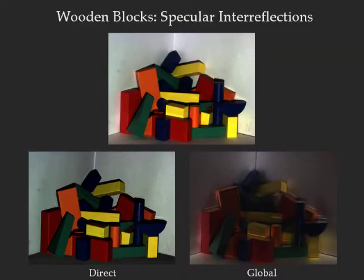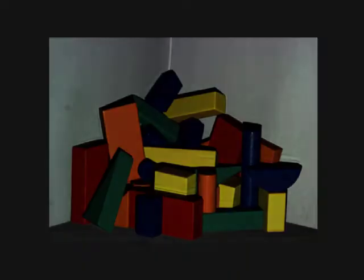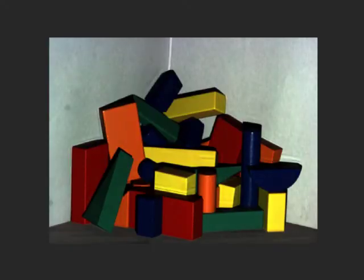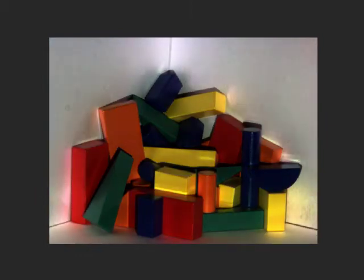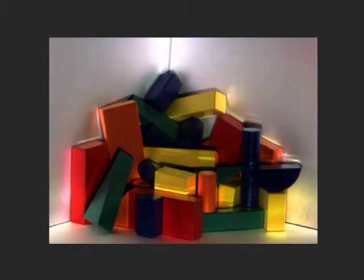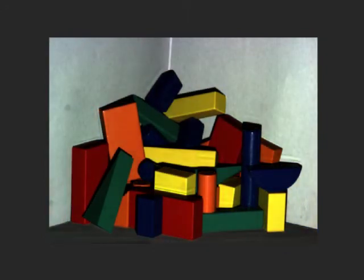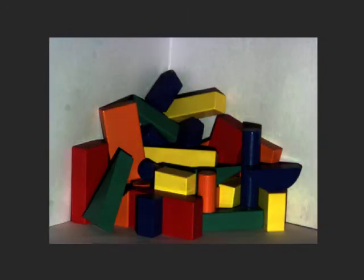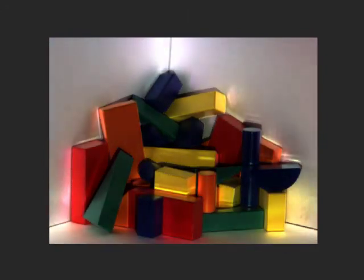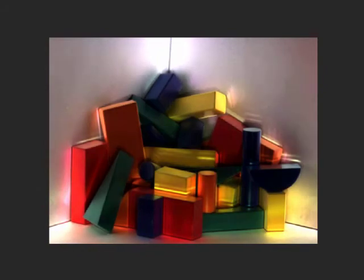In this scene with colored wooden blocks, the specular interreflections produce striking effects in the global image. Novel images of the scene can be generated by simply using a slider that changes the weighting between the direct and global components. This results in a set of physically impossible images that either over or under emphasize the interactions between the objects.